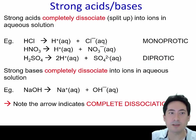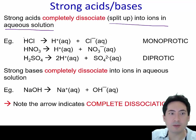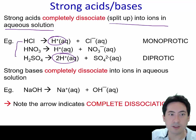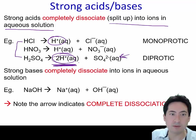Strong acids completely dissociate, splitting up into ions in aqueous solution — make sure you list all these things when you give a definition. Here we have a monoprotic acid, which gives off one proton, and a diprotic acid. For equal concentrations, the diprotic acid would have double the hydrogen ion concentration, so you'd expect double the effect on pH, twice the reactivity, and more conductivity.